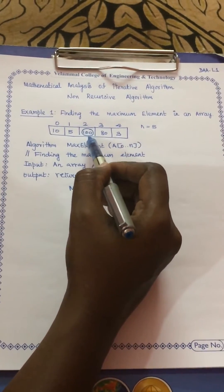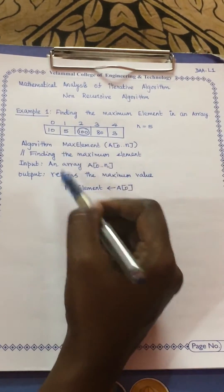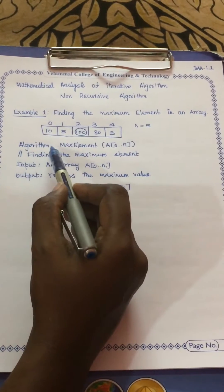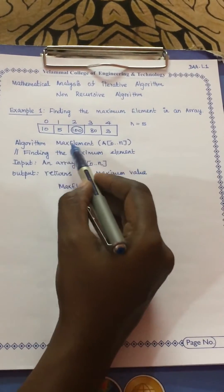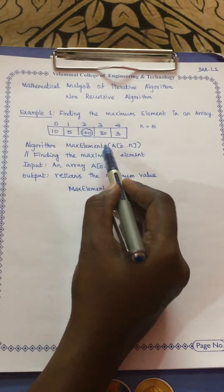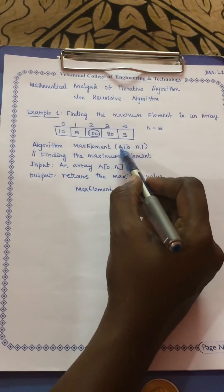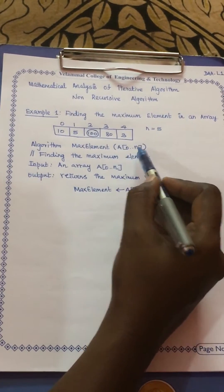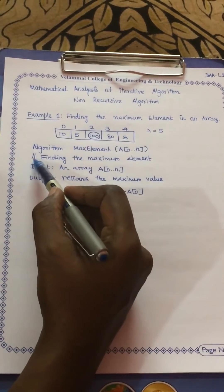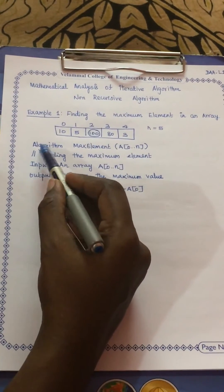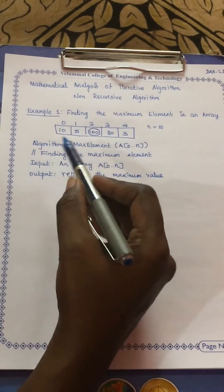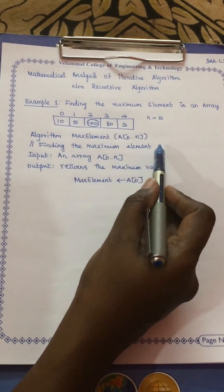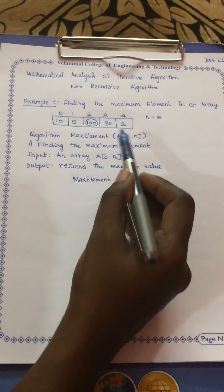To find this maximum element of 100, we are going to write an algorithm. Every algorithm starts with the keyword 'algorithm', followed by the problem name — here, 'maximum element' — and the array in which we are going to find it. The next step is a description of the algorithm.